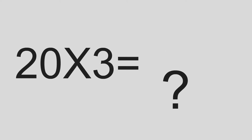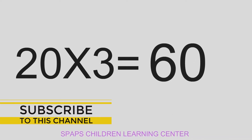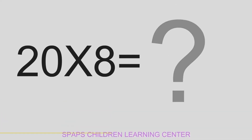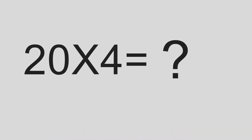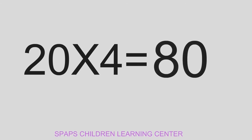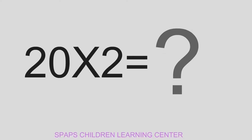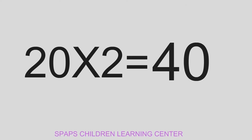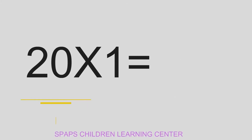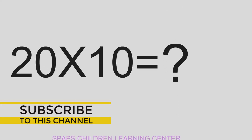20 times 3 equals 60. 20 times 8 equals 160. 20 times 4 equals 80. 20 times 2 equals 40. 20 times 1 equals 20.